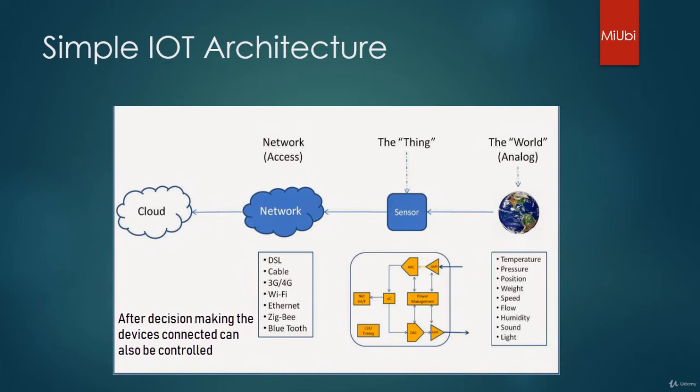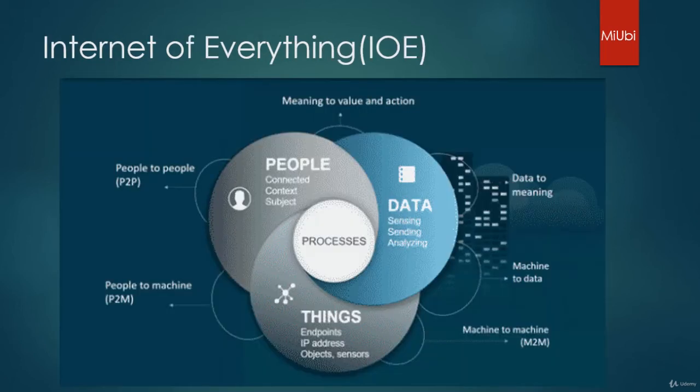A simple IoT architecture will have a sensor which tries to sense any kind of data — like temperature, pressure, position, weight, speed, etc. — which is connected to an analog to digital converter. This converts the analog signal to digital and gives it to a microcontroller, which is then connected to the internet and sends the data to the server.